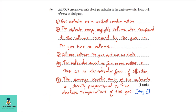Part B: list four assumptions made about gas molecules in the kinetic molecular theory with reference to ideal gases. The question asks for four; here I list five — you can always give any four. One, gas molecules are in constant random motion. Two, the molecules occupy negligible volume when compared to the volume occupied by the gas — that is, the gas has no volume. Three, collisions between the gas particles are elastic. Four, the molecules exert no force on one another — that is, there are no intermolecular forces of attraction. Five, the average kinetic energy of the molecules is directly proportional to the absolute temperature of the gas.